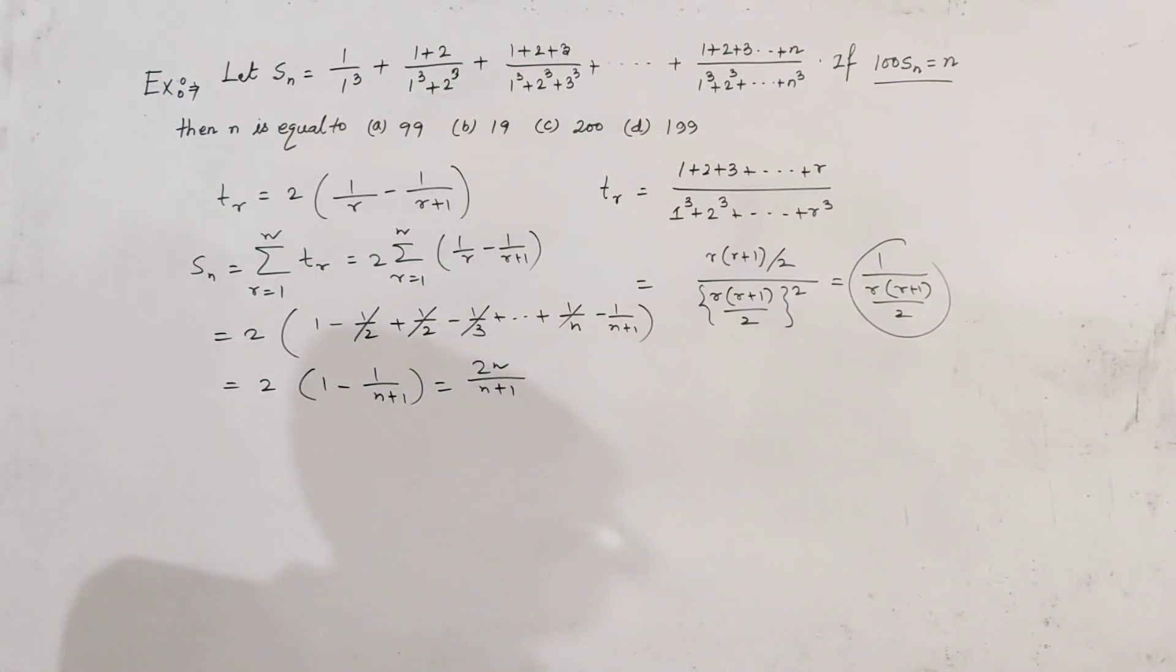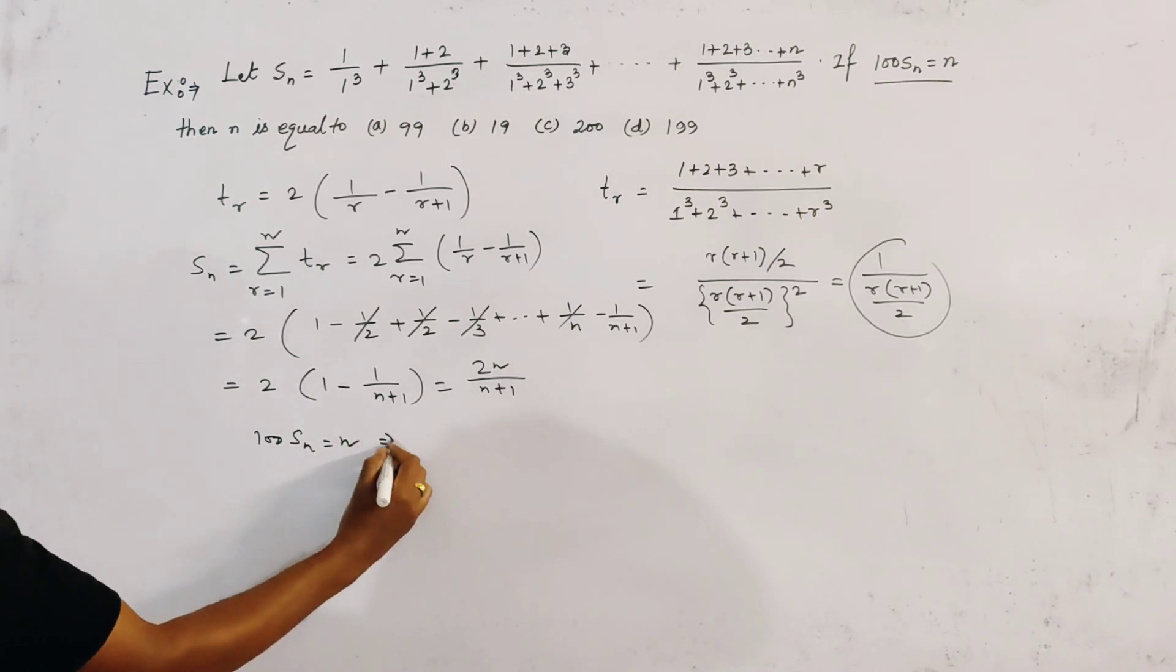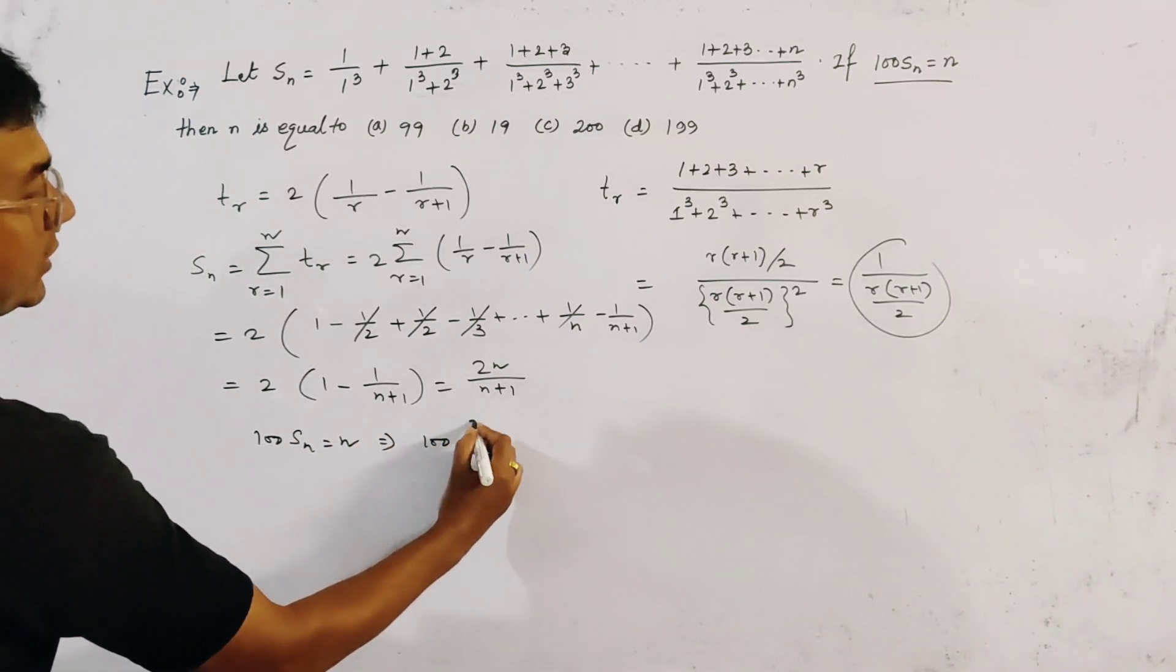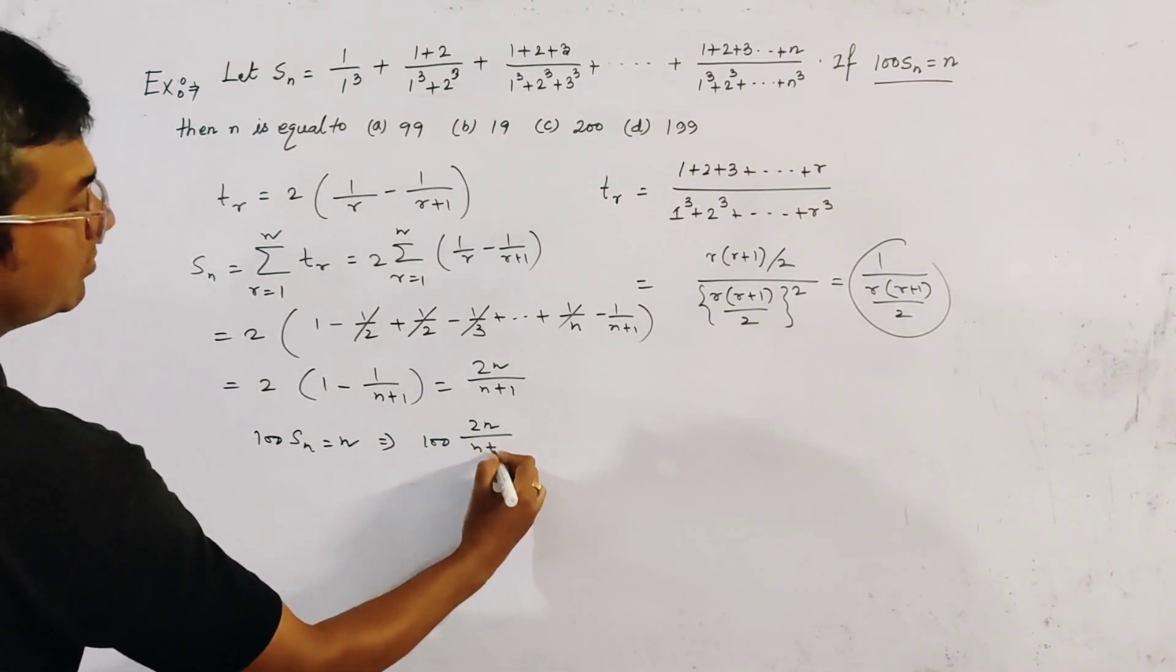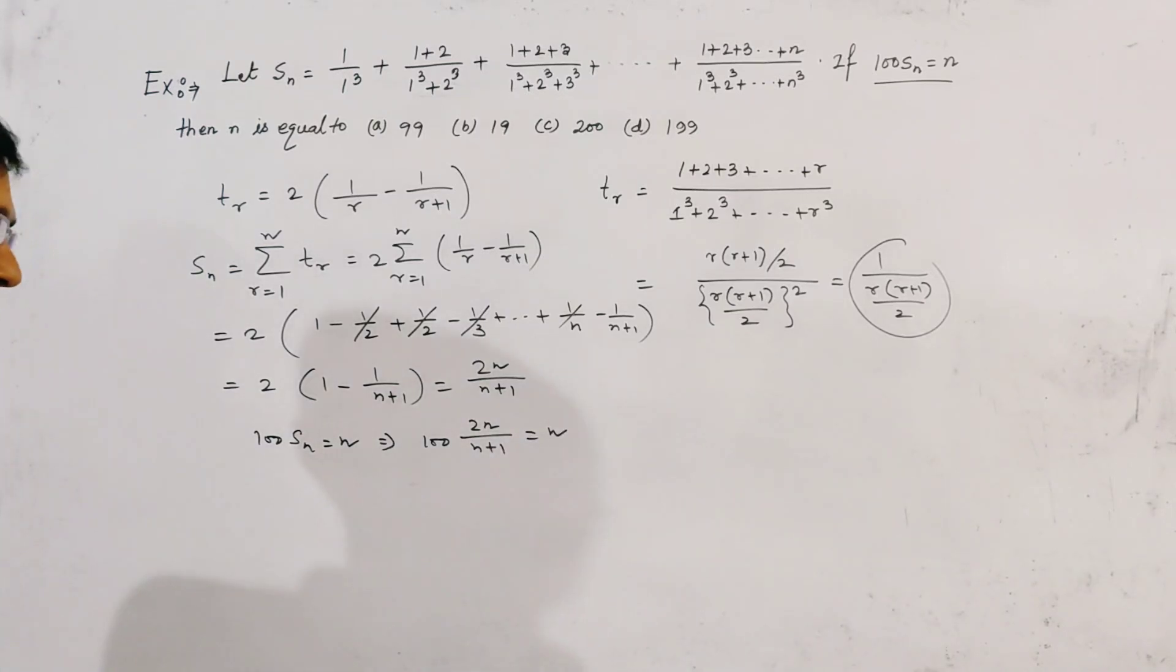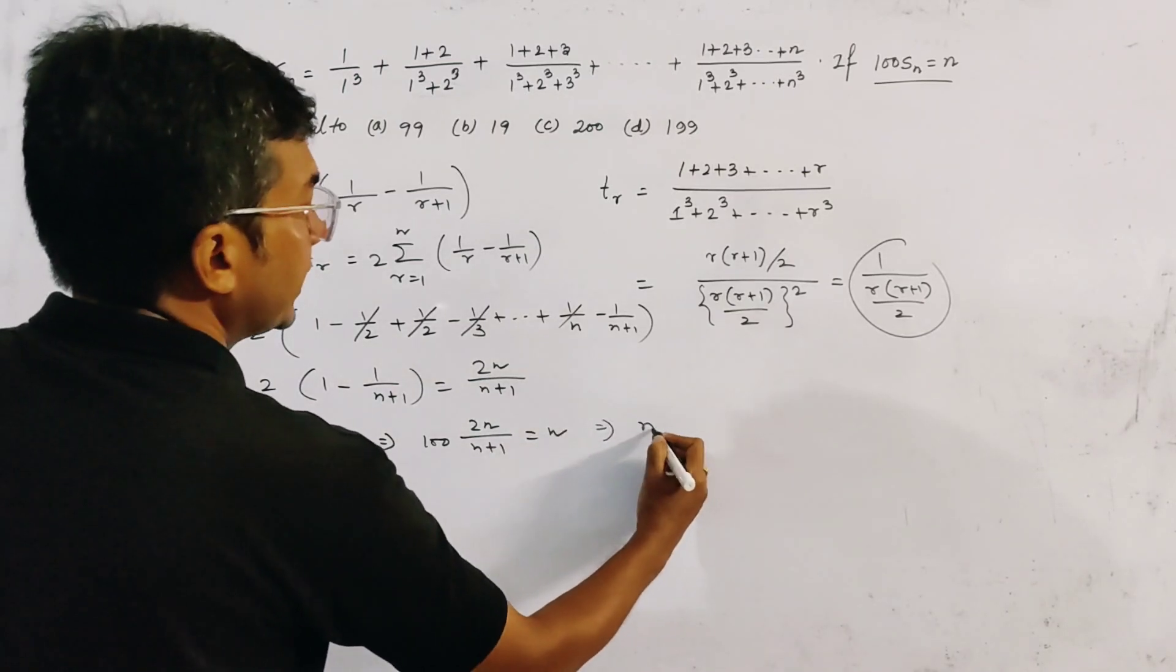So we get 100 times Sn equals n, which implies 100 times 2n/(n+1) equals n.